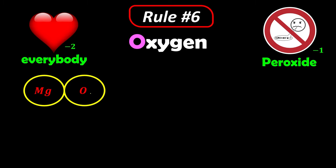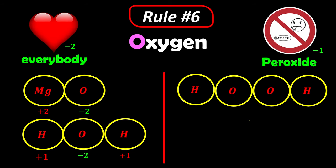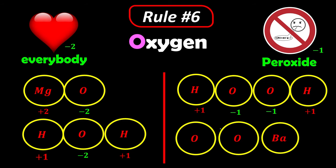For magnesium oxide: not a peroxide, so oxygen is −2. For water H2O: not a peroxide, so oxygen is −2 and hydrogen is +1. For hydrogen peroxide H2O2: both oxygens are bonded together, so it is a peroxide, oxygen becomes −1, and hydrogen is +1, summing to zero. For barium peroxide BaO2: both oxygens bonded together, oxygen is −1, and barium is +2.